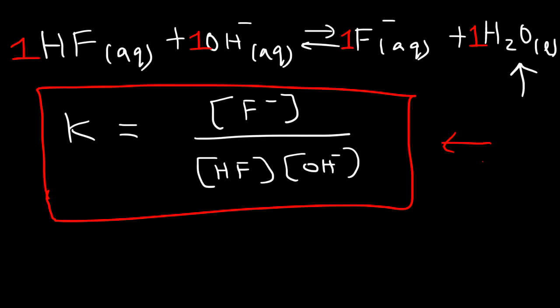And so now you know how to write the equilibrium expression for a chemical reaction. K is simply the ratio of the products divided by the reactants, and the coefficients in the balanced chemical equation are the exponents in this expression.